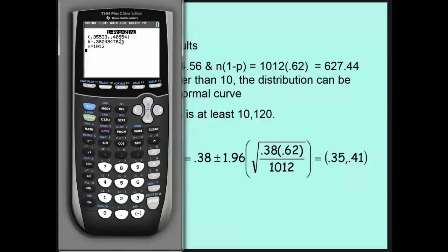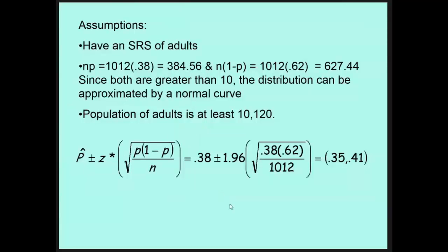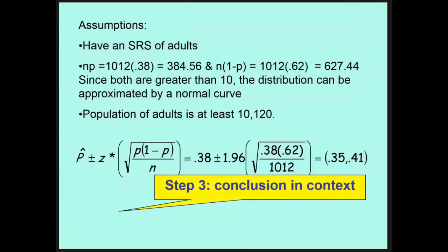You can kind of see there is sort of a rounding to this. It's not 100% exact, and really that rounds up to 0.36, but we'll go with 0.35 as far as this is concerned. So you can do it by hand where you actually type it in the calculator and then add and subtract, or you can use this one prop Z interval menu.